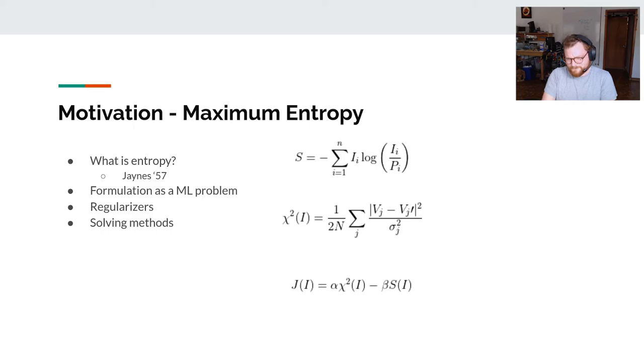And you solve this with normal gradient methods. Lagrange multipliers show up as these hyperparameters, alpha and beta, that you can just tune to get the desired result.